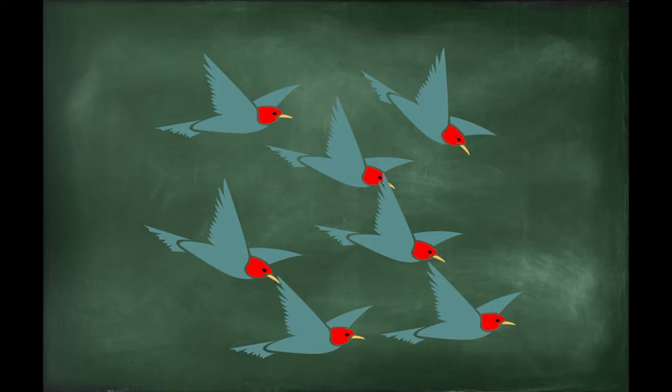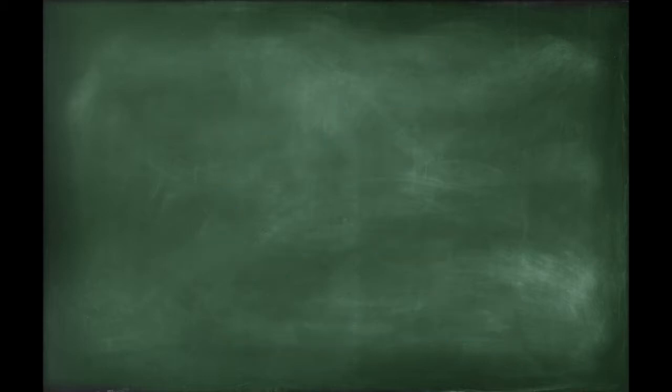In modeling collective behavior, it is useful to look at the correlation between two birds to see how they interact. The correlation factor Cij is just the dot product of the directional vectors of the two birds, i and j.